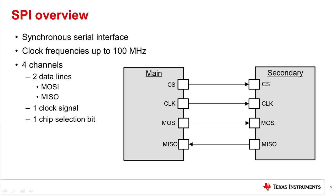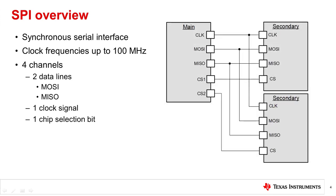The other two lines are clock frequency and one or more chip select bits. This figure shows how multiple secondary devices may be connected to one main controller, and this configuration may also include multiple chip select lines for each secondary device from the main controller.